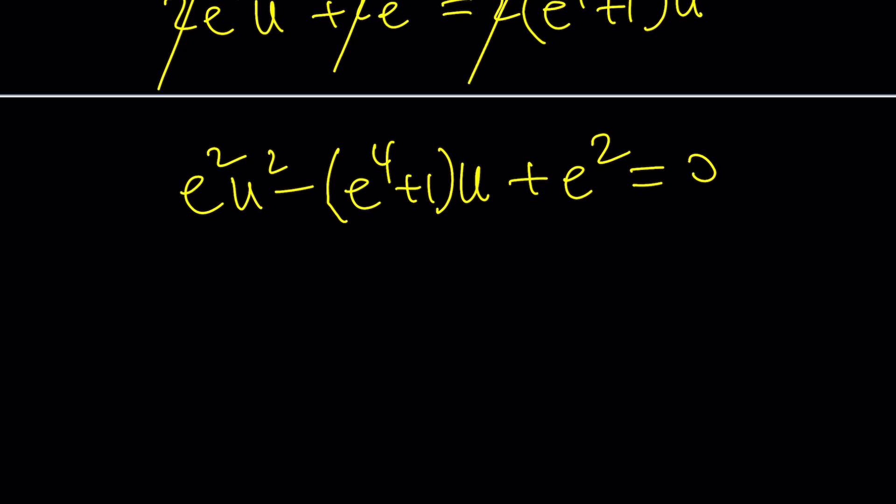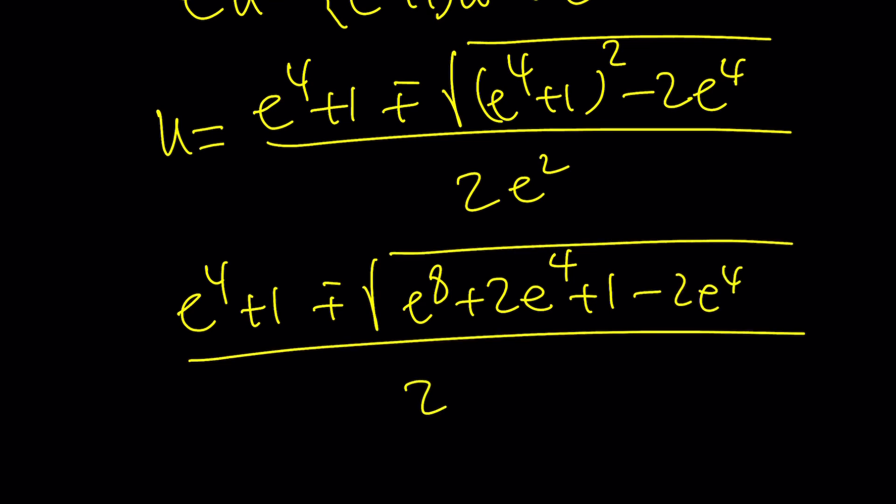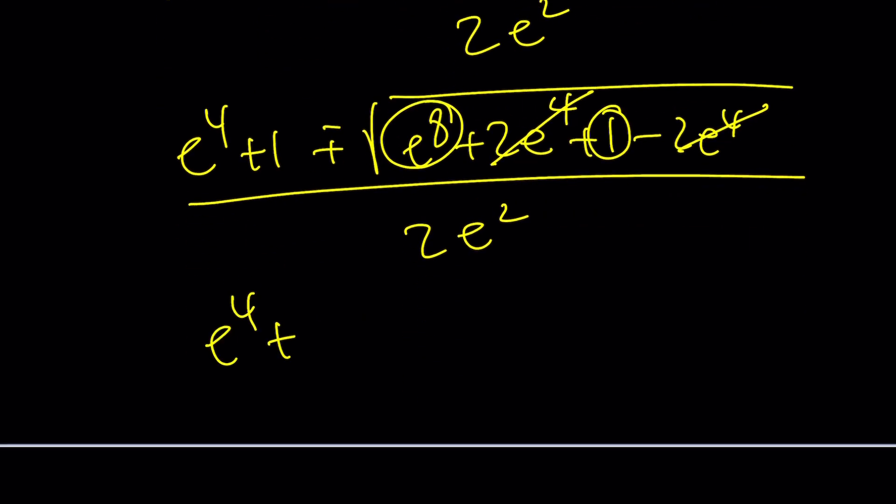We could divide by e squared as well, but let's not do it. Let's just use the quadratic formula. Negative b plus minus the square root of b squared minus 2ac. That's going to give us e to the fourth. And then all of that is divided by 2e squared. And then let's go ahead and expand inside the radical. We're going to get e to the eighth plus 2e to the four plus one minus 2e to the fourth and then divide by 2e squared. And then here the 2e to the fourth is going to cancel out. We are left with this plus this. And that was not what I was expecting.